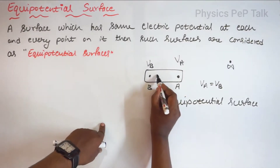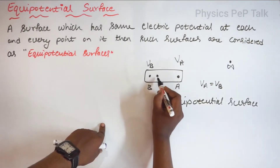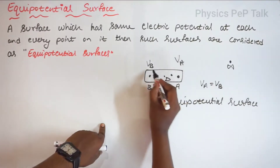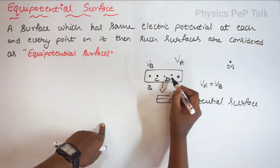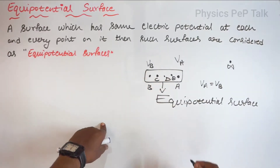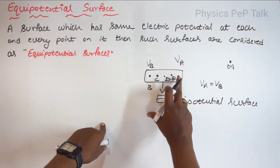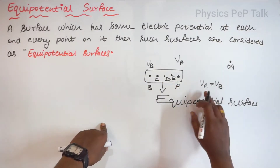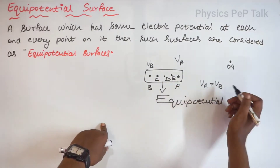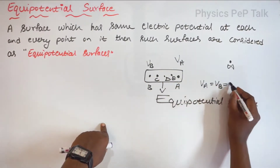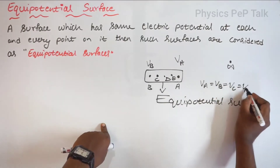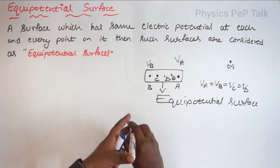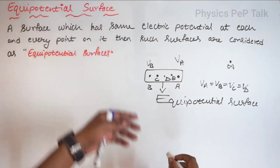I will consider more number of points — point C and point D. On this surface, considering all points, electric potentials at each and every point will be the same. That is, V of A is equal to V of B, equal to V of C, equal to V of D. Then such a surface is called an equipotential surface.